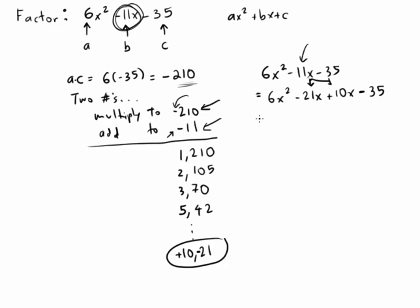Now we do that because we want to do grouping. Factor by grouping. And so we pair these up. 6x squared minus 21x and 10x minus 35. And then we factor from each pair.